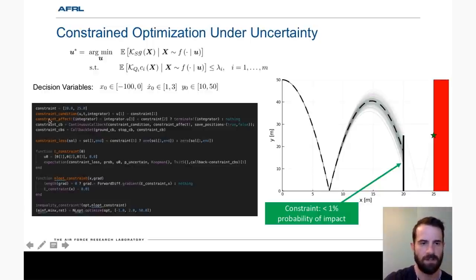We have the same decision variables. So here we are simply setting up the ODE problem. We have some different callbacks we need to set up. We set up the constraint function. Here it's simply an indicator function and returns a one if a trajectory would hit the wall, a zero otherwise. And the expectation of that function will return your probability.